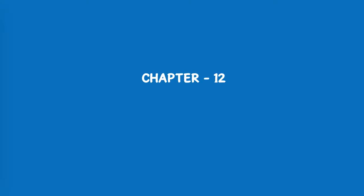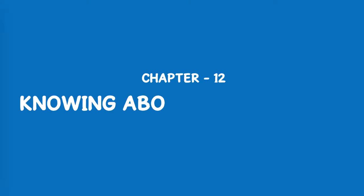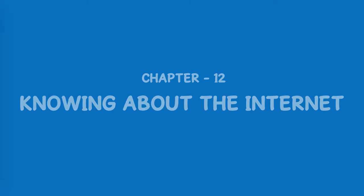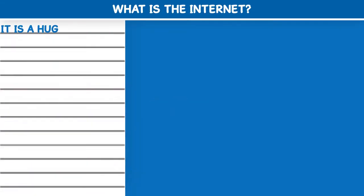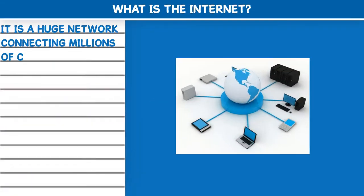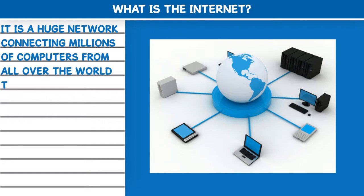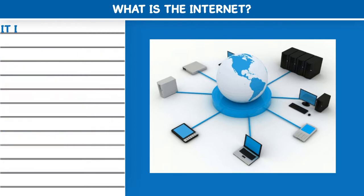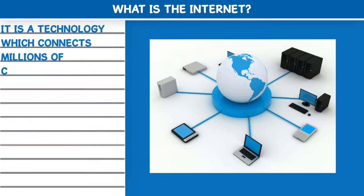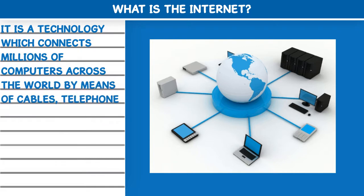Chapter 12: Knowing about the Internet. What is the Internet? It is a huge network connecting millions of computers from all over the world that allows users to share information and communicate with each other. It is a technology which connects millions of computers across the world by means of cables, telephone wires, or some wireless media.